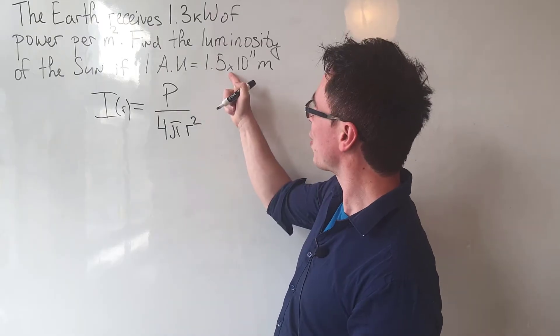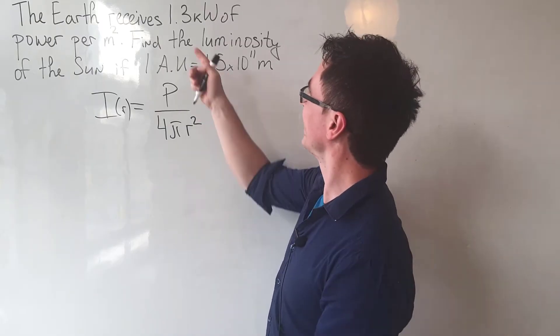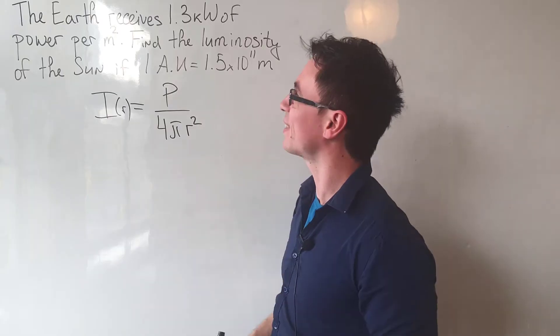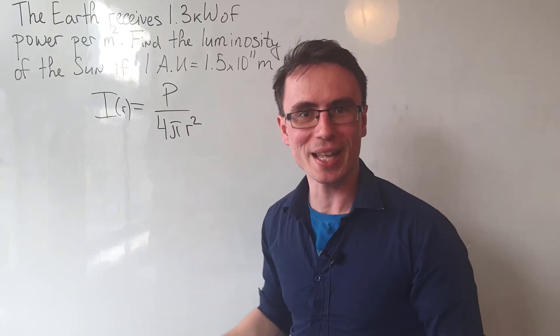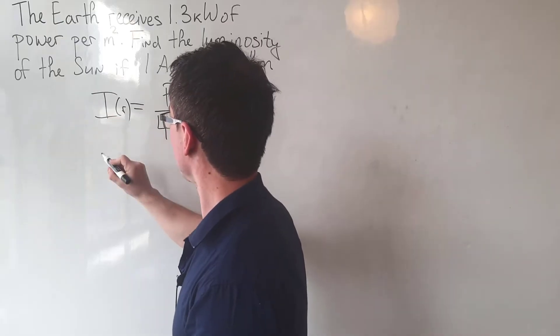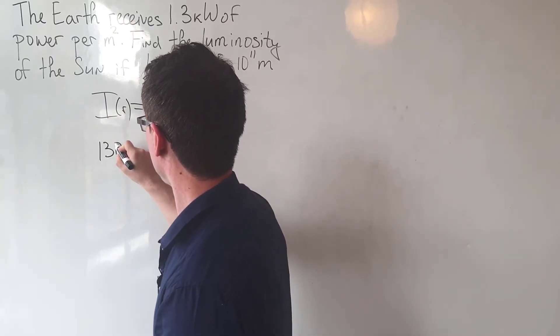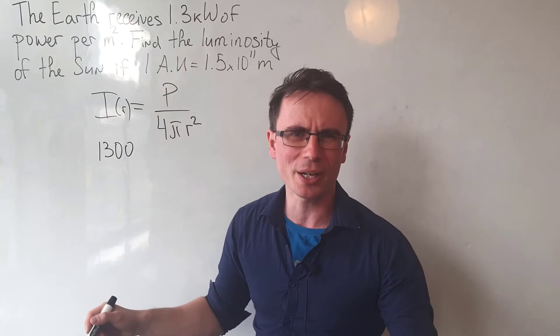When the distance is equal to one astronomical unit, the intensity is 1.3 kilowatts per square meter. So let's use that, and we can say that the intensity is equal to 1.3, which is equal to the power over 4π.